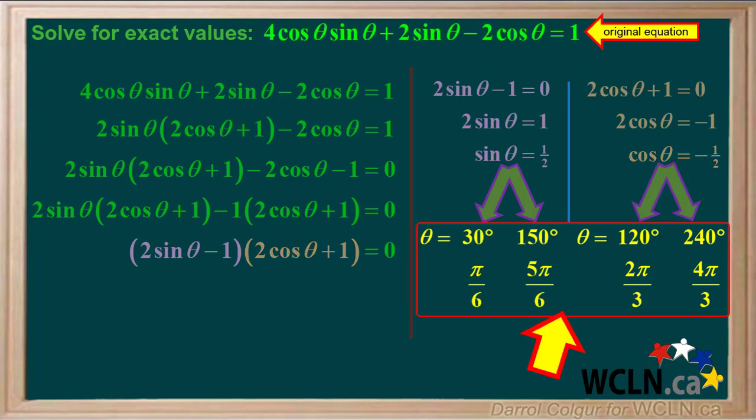To summarize, these four angles for angle theta will solve this equation exactly. A good way to check your answer would be to insert each of these four angles in for theta on the left side of the original equation and see if you get 1 for an answer. Let's do one more example.